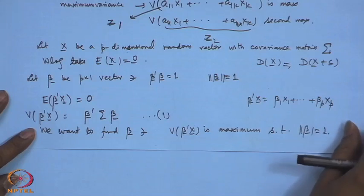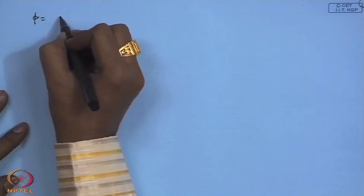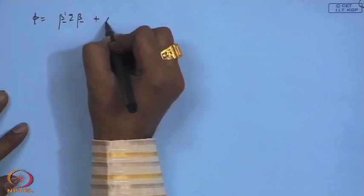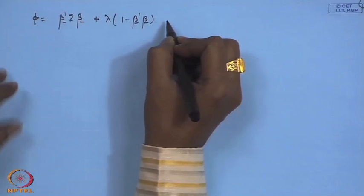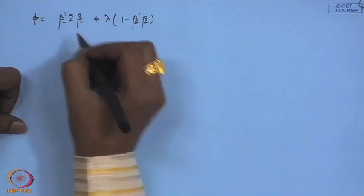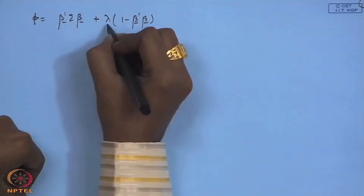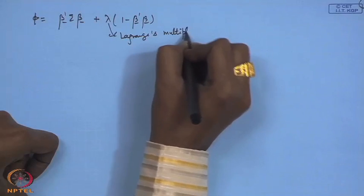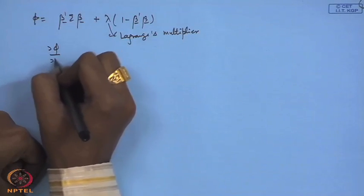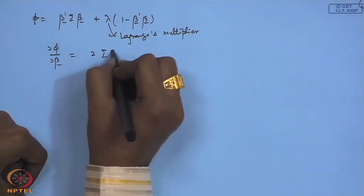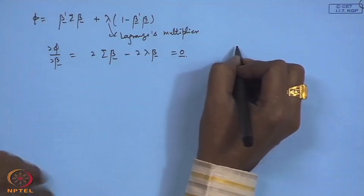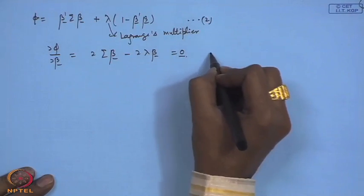We apply the method of Lagrange multipliers. We consider the function φ = β'σβ + λ(1 − β'β). Taking the derivative ∂φ/∂β = 2σβ − 2λβ and setting this equal to 0.